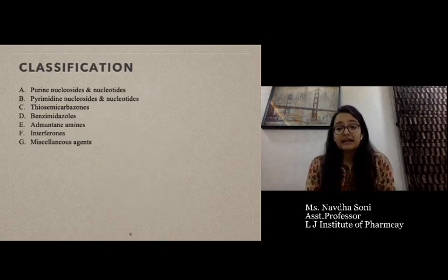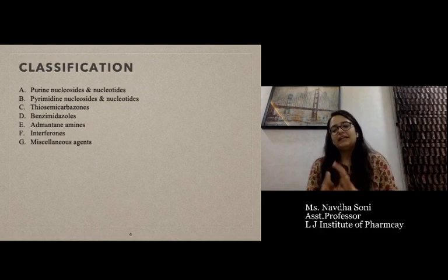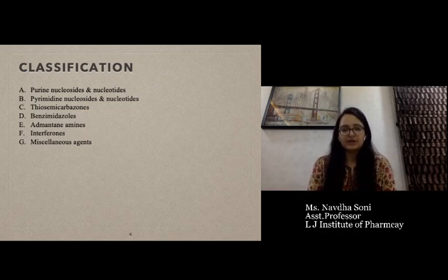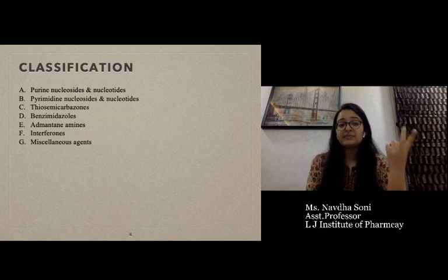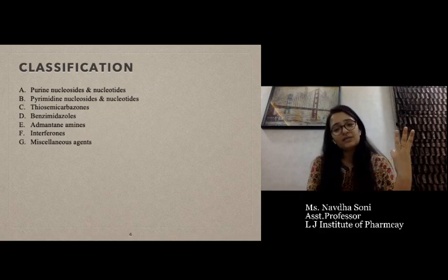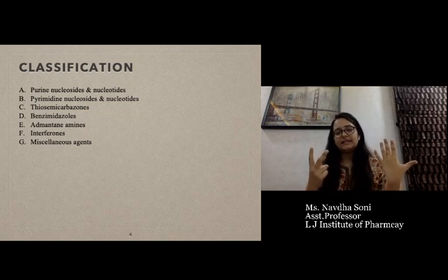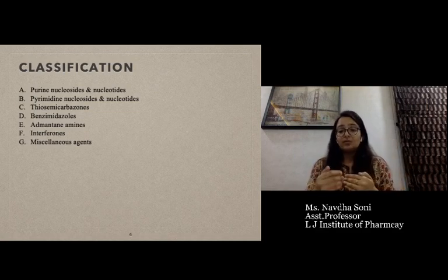The major part is the classification of antiviral drugs. These seven classes are most important: purine nucleoside and nucleotide, pyrimidine nucleoside and nucleotide, thiosemicarbazone, benzimidazole, adamantanamines, interferons, and miscellaneous agents. We will see each one by one.